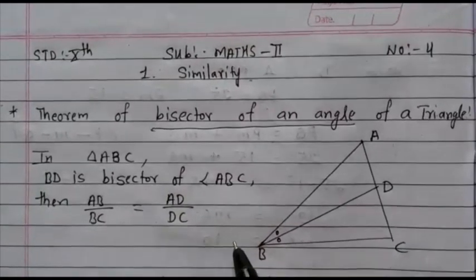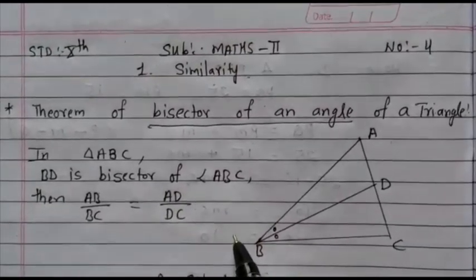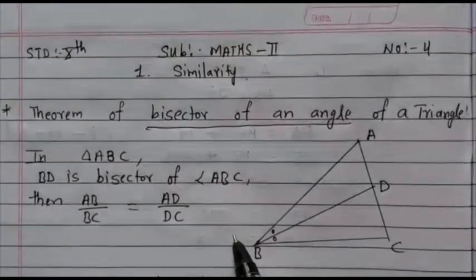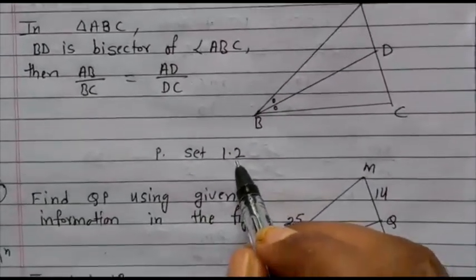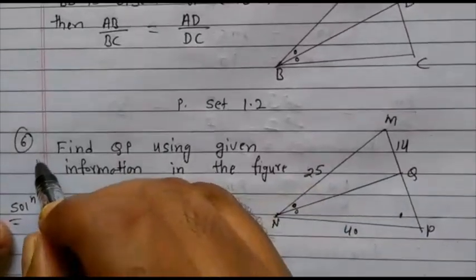This is the property of bisector of an angle of a triangle. Now, we are going to look at practice set 1.2, question number 6.